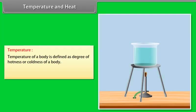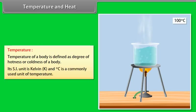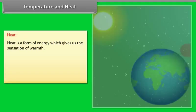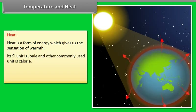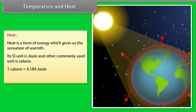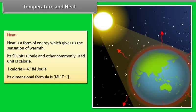Temperature and heat: Temperature of a body is defined as the degree of hotness or coldness of a body. Its SI unit is Kelvin, and degree Celsius is a commonly used unit. Heat is a form of energy which gives us the sensation of warmth. Its SI unit is Joule; another commonly used unit is calorie — one calorie is equal to 4.184 Joule. Its dimensional formula is ML²T⁻².